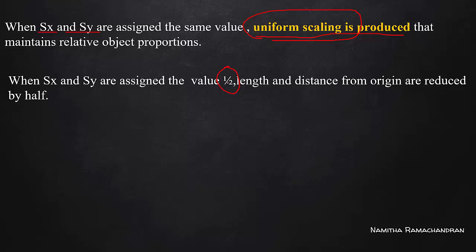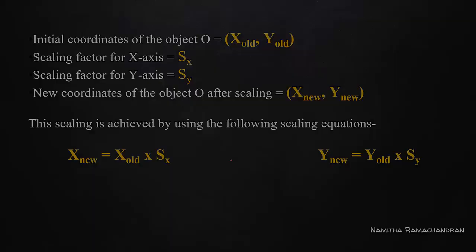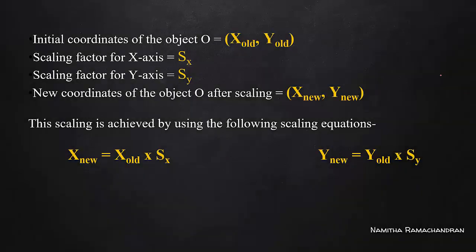When Sx equals Sy equals half, the result is half the size of the original object. When Sx equals Sy equals 2, the recreated object is double the size of the original. The old coordinates are X_old and Y_old, scaling factors are Sx and Sy, and the new coordinates are X_new = X_old * Sx and Y_new = Y_old * Sy.